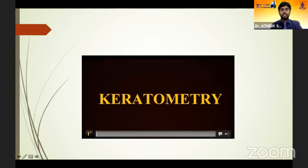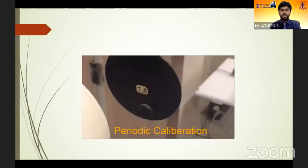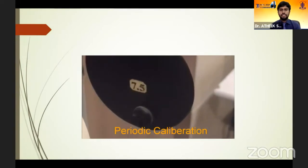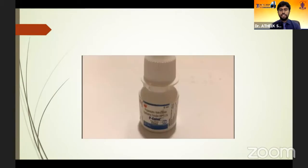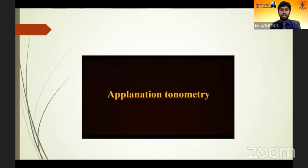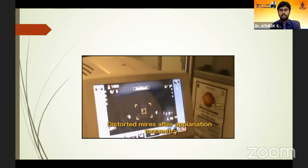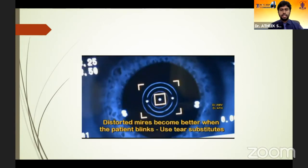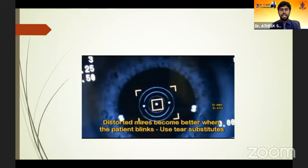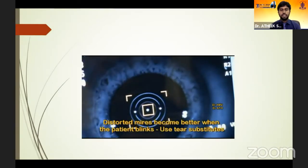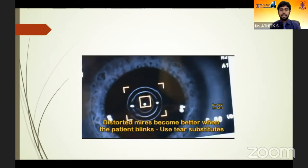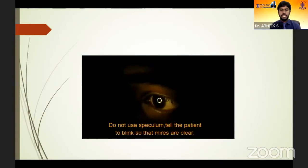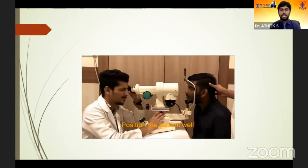Practical tips for manual keratometry: calibration is very important, and the user must adjust the eyepiece based on their refractive error. Always perform on a virgin eye — do not do it after applanation tonometry or after applying local anesthetics, which will disturb the cornea. Ensure that the tear film is proper before keratometry. Do not perform on a very dry eye. If you suspect dry eye, tell the patient to blink frequently, apply a drop of CMC, and then proceed.